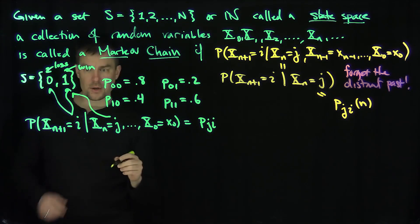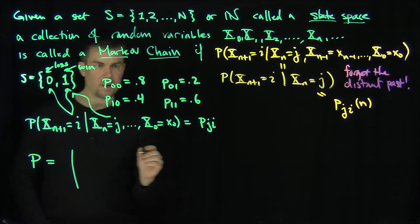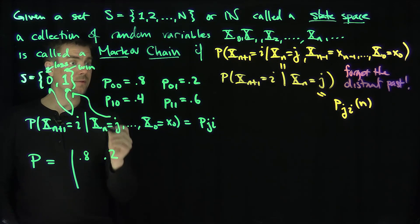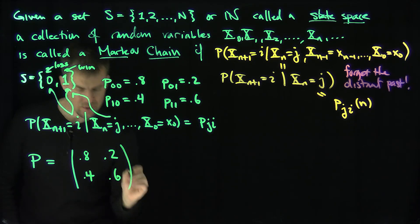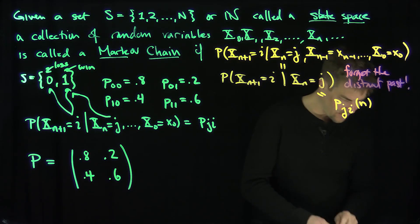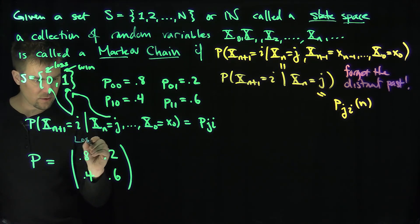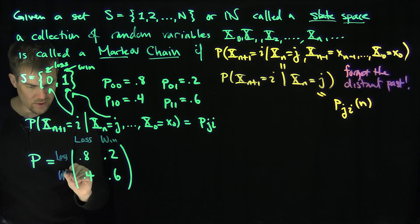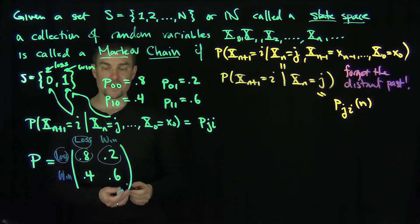So we can represent this Markov chain as a matrix. Here's my matrix P. My matrix P is going to be 0.8, 0.2, 0.4, and 0.6. And I typically like to write the states above the matrix. This is a loss, this is the win. This row is the loss, and this is the win. Going from a loss to a loss is 0.8, from a loss to a win is 0.2, from a win to a loss is 0.4, and from a win to a win is 0.6.